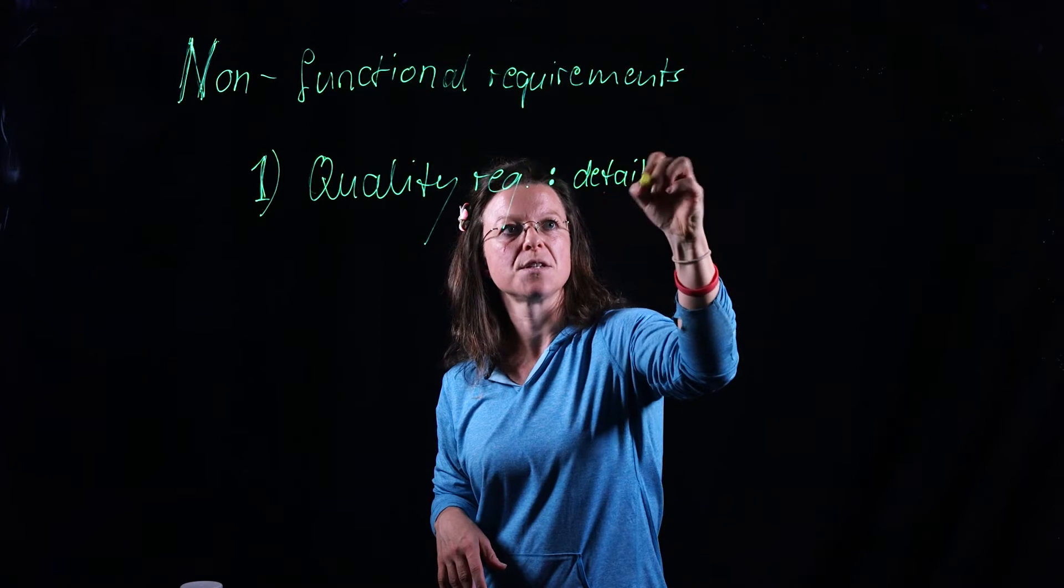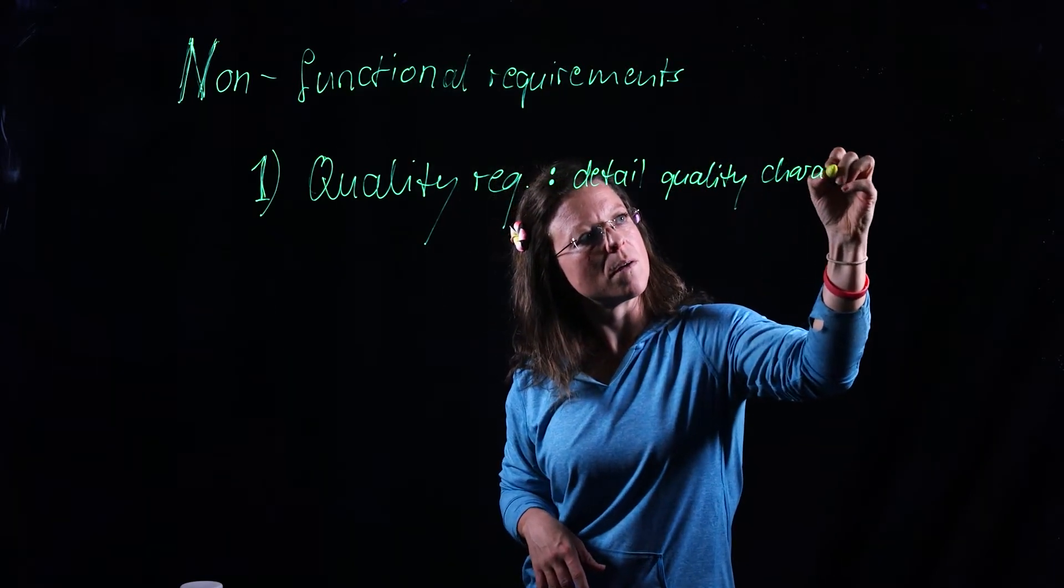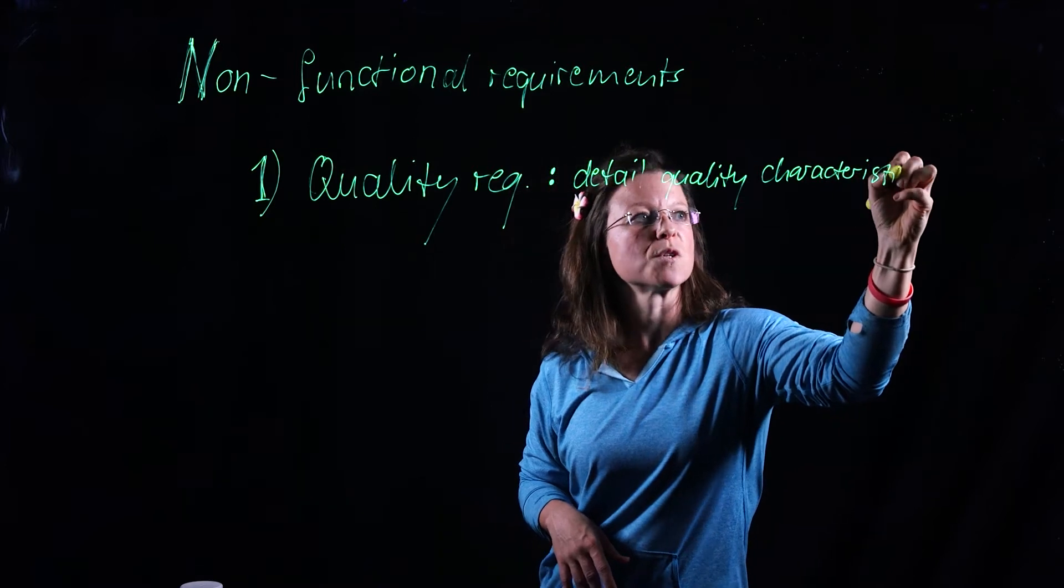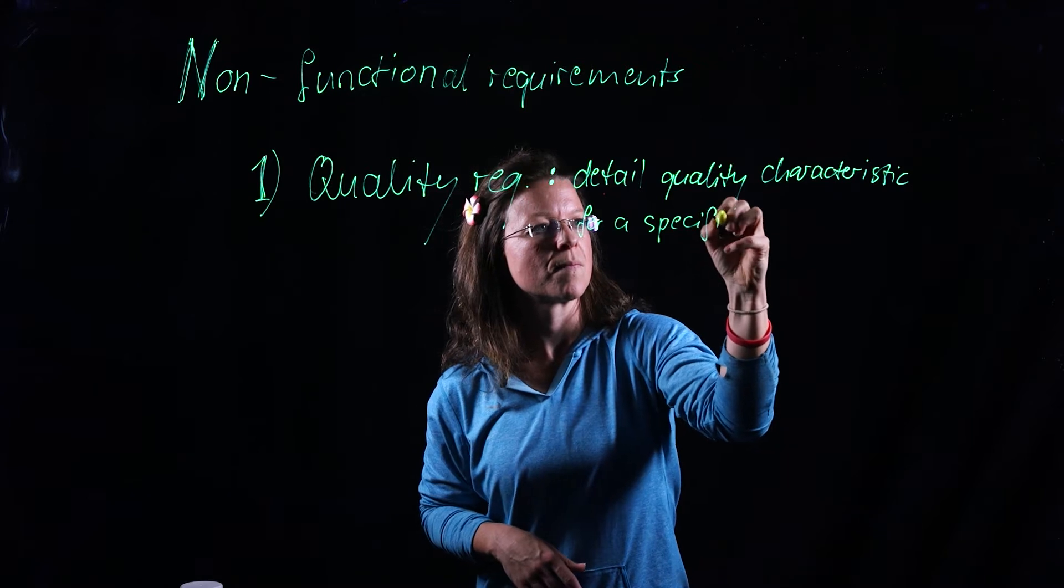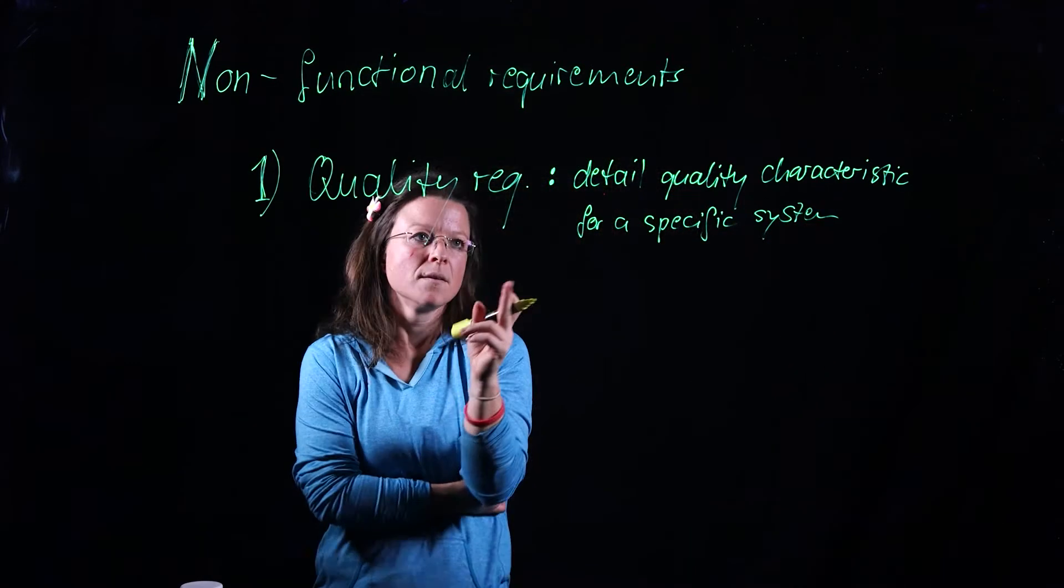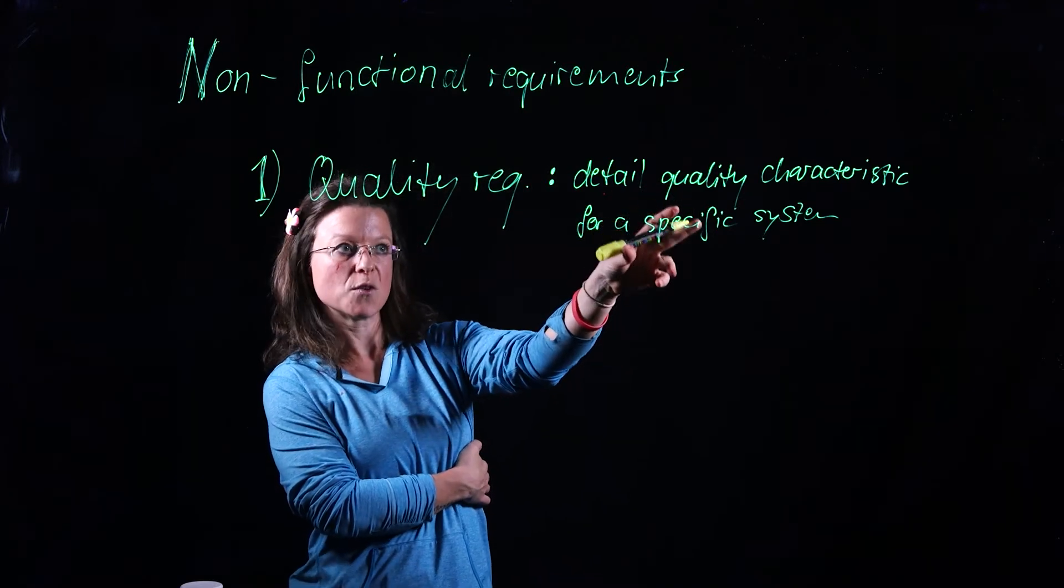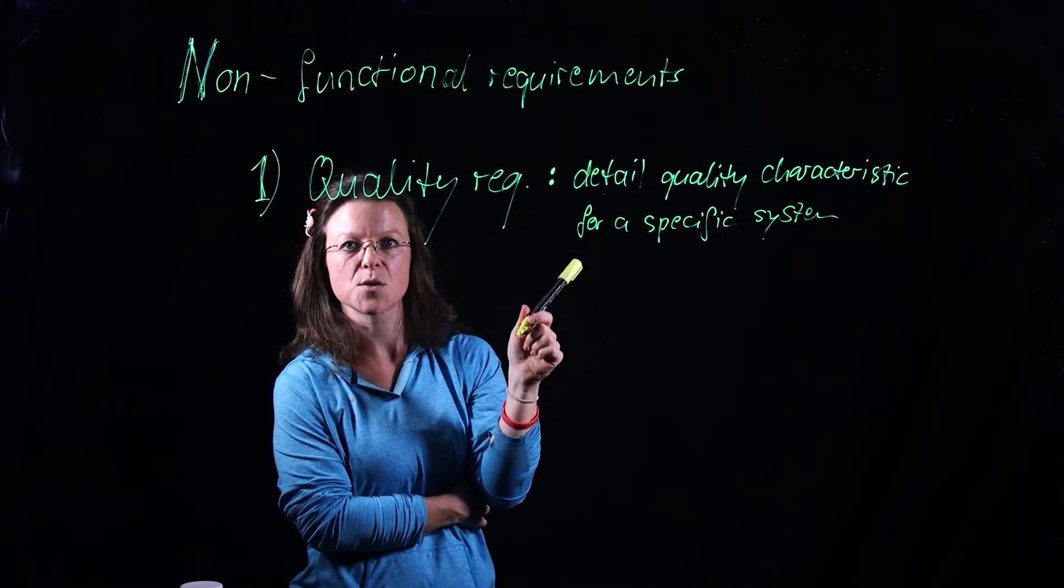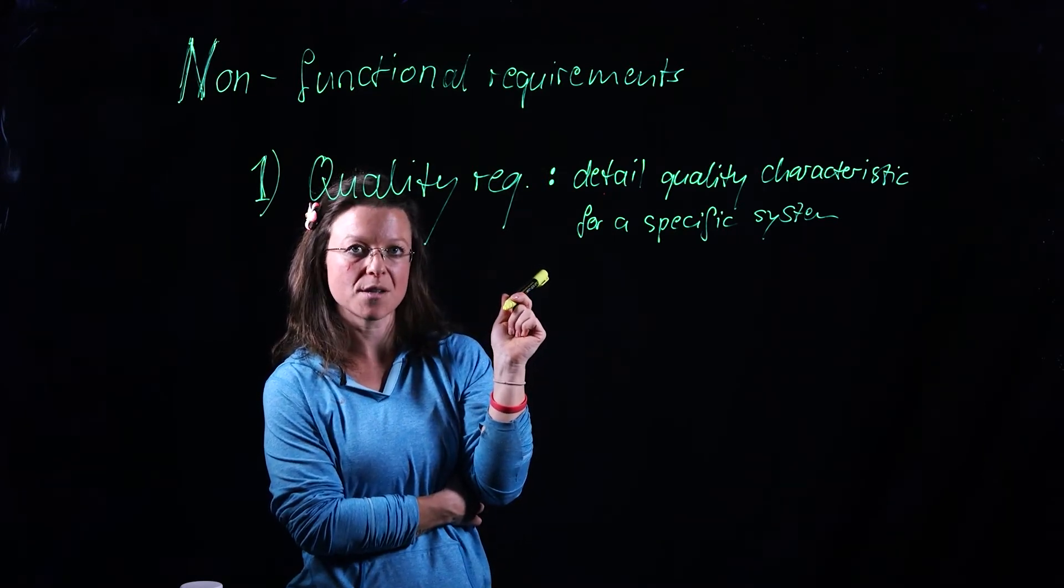So the detailed quality characteristics for a specific system and if you want to know what those quality characteristics are, a full list of those is available in the ISO 25-010. That's the standard for software quality models.